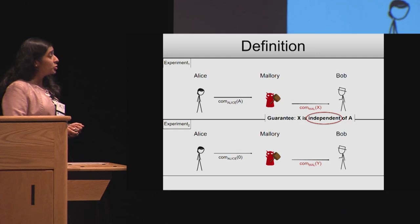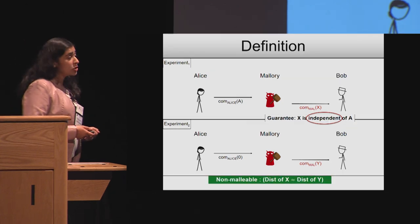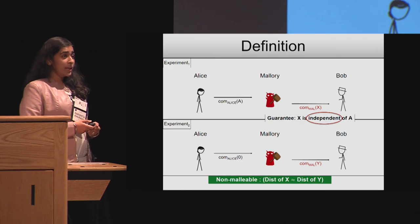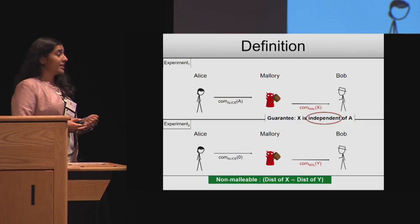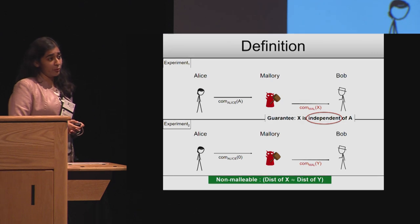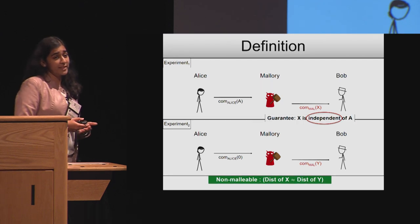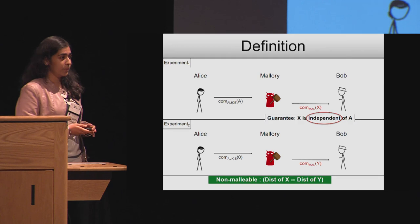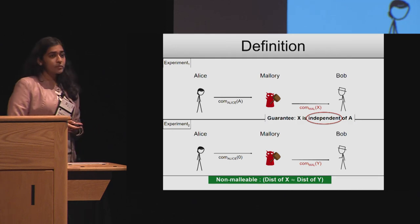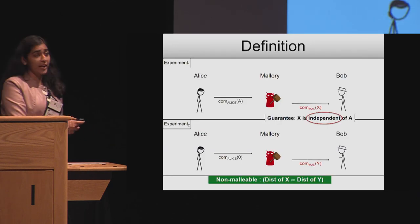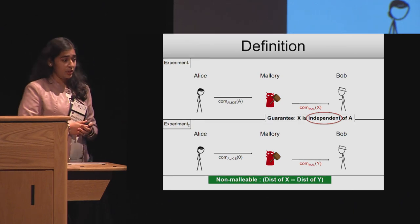If we can guarantee that the distribution of x in experiment one is indistinguishable from the distribution of y in experiment two, then that means x is essentially independent of a — because x is indistinguishable from y, and y is independent of a because the second experiment is independent of Alice's input a. So that's the definition we will strive to achieve.